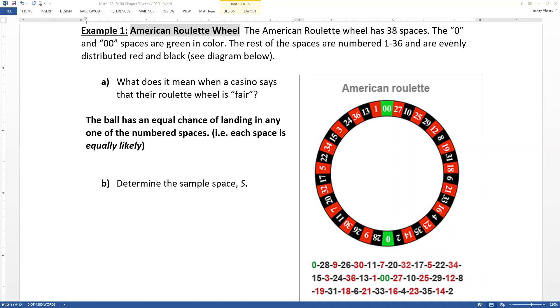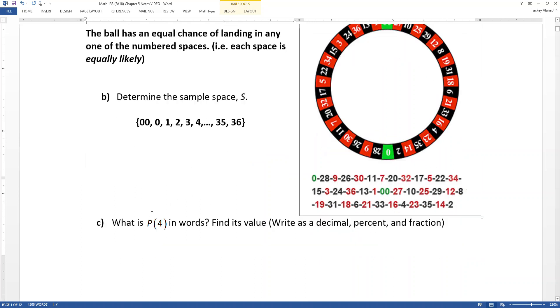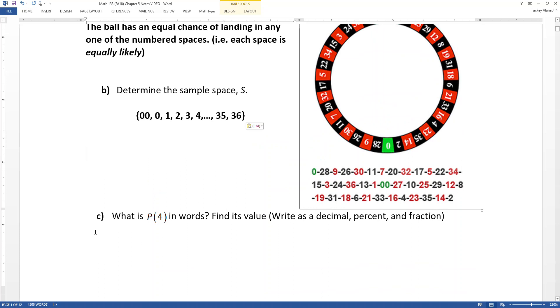Now the sample space is the list of all possible outcomes. Now in the American roulette, there's 38 possible outcomes. I'm not going to list all of them. I'll just put a little ellipsis in there for dot, dot, dot. So I'll start with 0, 00, and then it just goes 1, 2, 3, 4, 5, all the way up to 36. Right. It's just the numbers. Remember that they're all there. You can look through the wheel if you want. But when they made the wheels, they made them so they're kind of randomly around there. It's not entirely random. There's a pattern to it. But I didn't invent the wheel. It's just how it is.